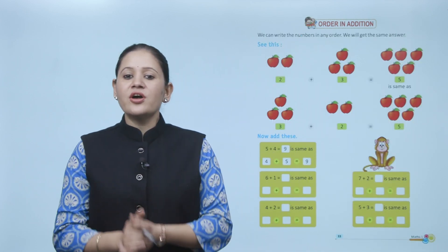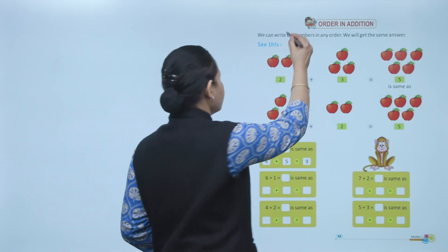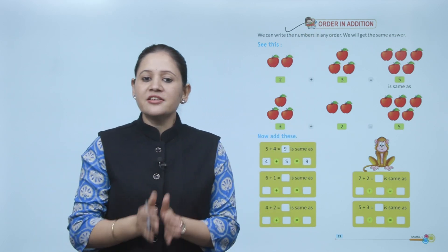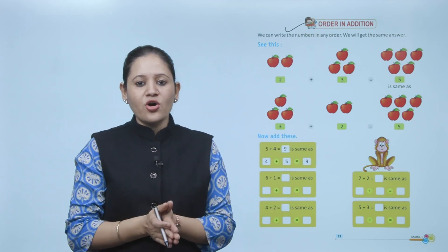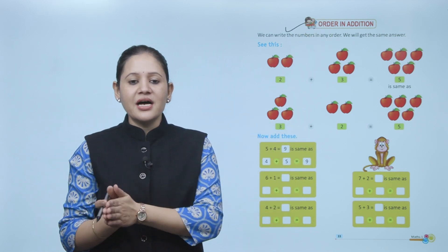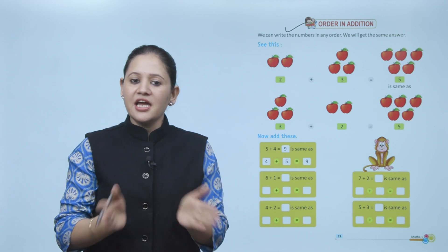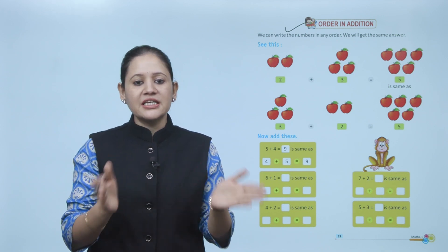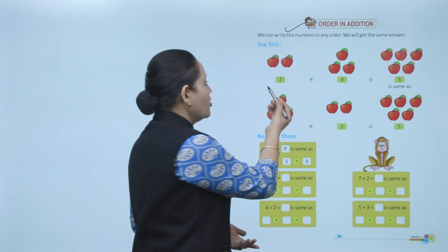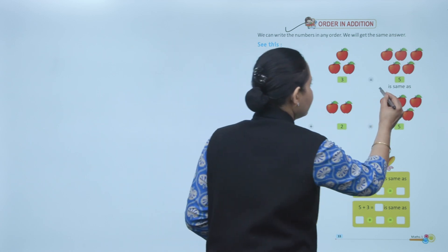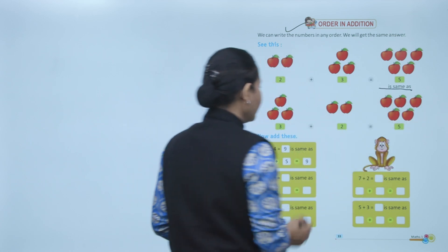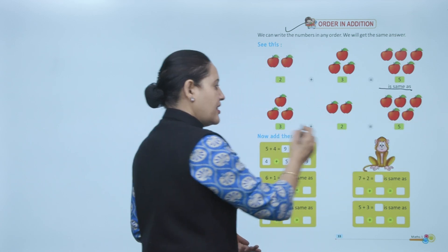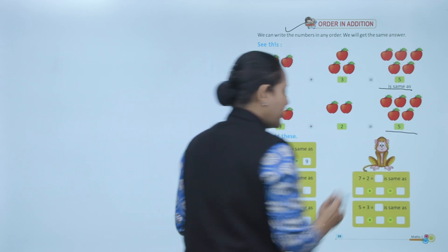Next is order in addition. We can write numbers in any order and will get the same answer. We can add two or more numbers in any order. Here two plus three equals five, which is the same as three plus two, which is again five.